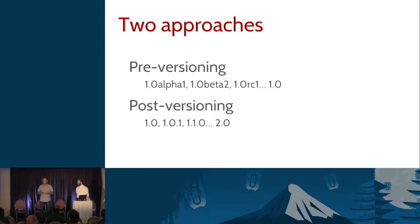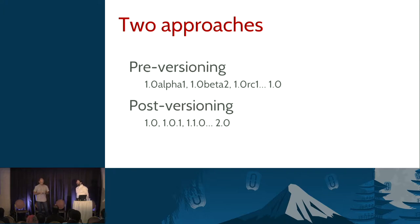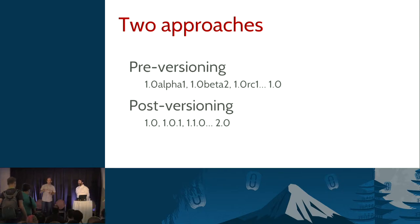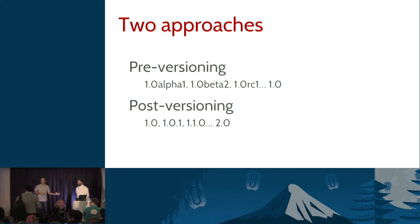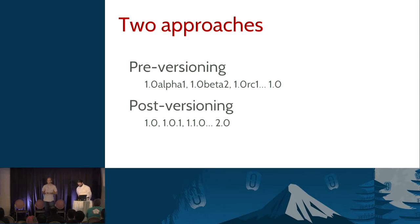The second approach is called post-versioning - you decide the version number at the time you release. The good aspect is you can pick meaningful version numbers because at that time you know exactly what will be in your releases. You can use major version bumps if you change a lot, or smaller bumps if you didn't change much. The issue is you cannot issue developmental milestones along the way because you don't know which version you're going to produce - so you would only do full releases in the post-versioning model.